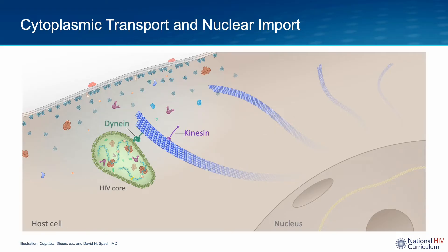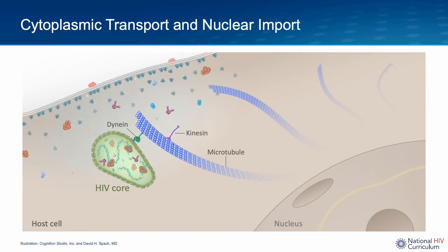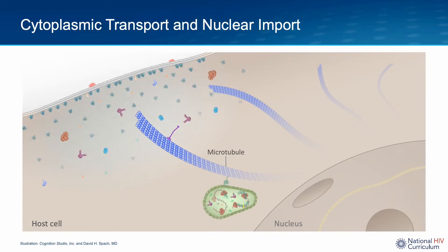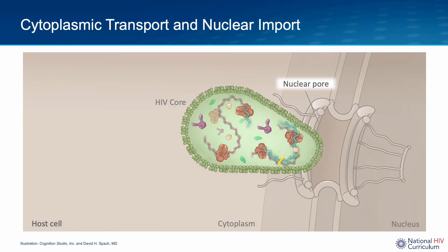The transport via microtubules is a dynamic process involving multiple host proteins including dynein and kinesin. Dynein accelerates transport toward the nucleus, whereas kinesin promotes movement away from the nucleus. During cytoplasmic transport, the intact cone-shaped HIV core moves along the microtubule until it reaches the outer region of the host cell nucleus. For the core to make its way into the nucleus, it must pass through the nuclear pore.